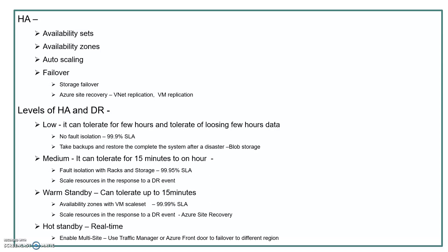Hot standby means you cannot tolerate any downtime for your business. In that case, enable multi-site: configure your entire system in region 1, with full redundancy in region 2 as well. Whenever a disaster happens in one region, fail over to the second region, ensuring zero downtime. You can use Traffic Manager or Azure Front Door to route traffic as part of your DR plan. Please refer to the Azure site documentation for more detailed information.